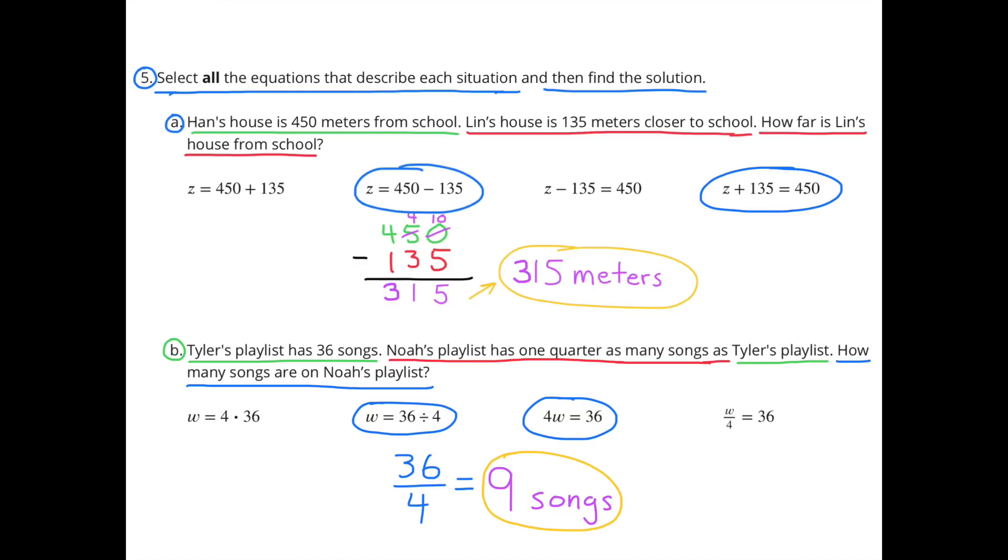W equals 36 divided by 4 represents 1 fourth of the 36 songs in Tyler's playlist. And 4W equals 36. 4W means 4 times W or 4 times the number of songs in Noah's playlist. And that would equal 36, the same number of songs in Tyler's playlist.